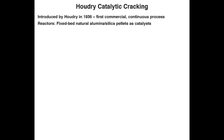The first cat cracking process was a batch process introduced in 1915, the McAfee process, where a Lewis acid like aluminum chloride was used in the batch reactor system.